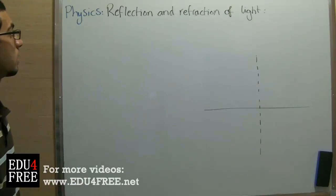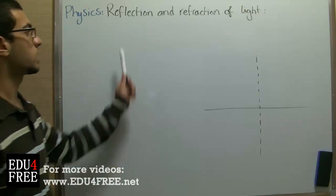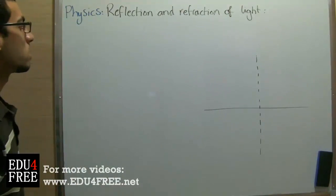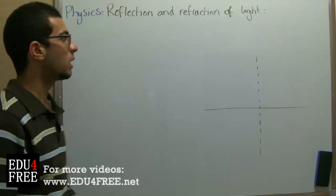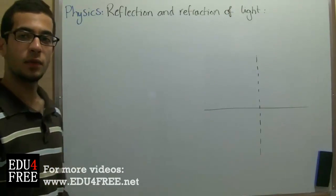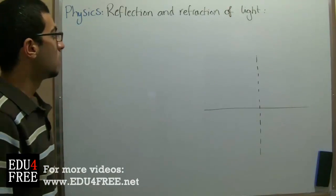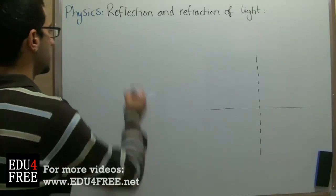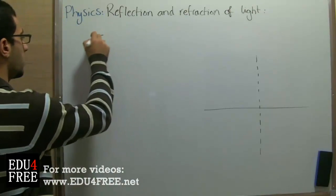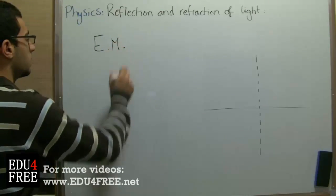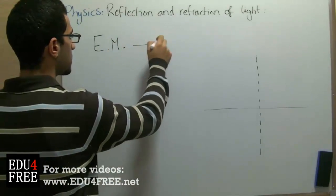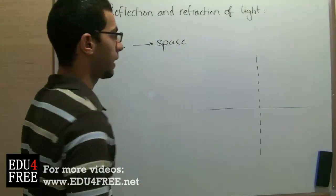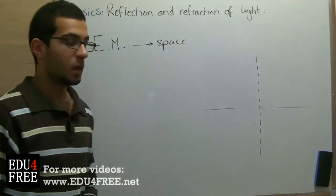Assalamu alaikum. Today we will talk about reflection and refraction of light. Light as a wave motion undergoes reflection and refraction. But light, as an electromagnetic wave, can travel through space — it doesn't need a medium to propagate through.